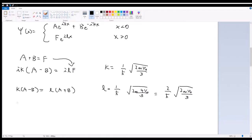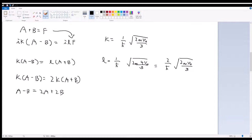So in that case, we can rewrite this as K times A minus B is equal to 2K times A plus B. Then we can just cancel out the Ks and we get A minus B is equal to 2A plus 2B. And then we move these around, then we get negative A is equal to 3B.